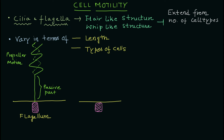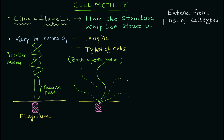In the case of cilia, there is a basal body, shown here in pink. The cilia extend from the basal body and perform a back-and-forth motion directly from the base — there is no passive part as seen in flagellum. The length of cilia is also smaller than that of flagellum.